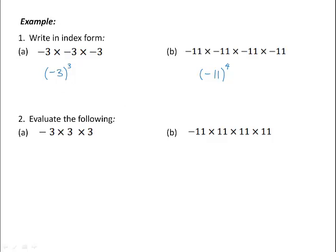A power outside a bracket applies to everything inside the bracket. In this case, we have 3 times by itself 3 times, but there is only one negative out the front. So as a power it will be negative, but it is only 3 to the power of 3. No brackets are needed here because the power of 3 only applies to the 3 and not the negative. In this case, we have 11 times by itself 4 times, so the base number would be 11, raised to the power of 4, but it is also negative.